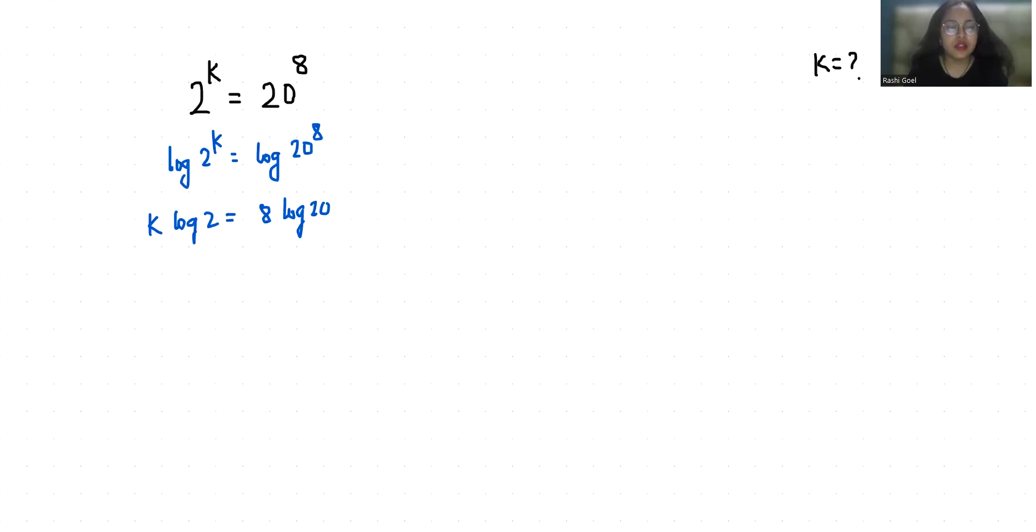k log 2 equals 8 log 20 as 2 times 10. Now according to log rule, log a times b equals log a plus log b.